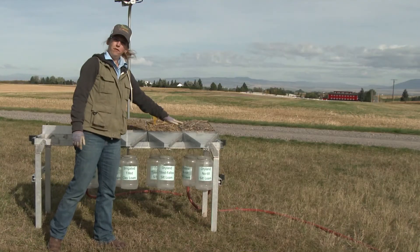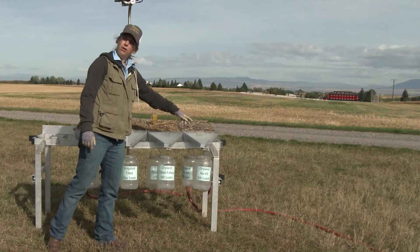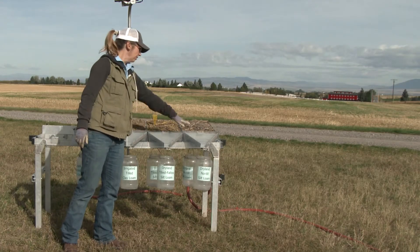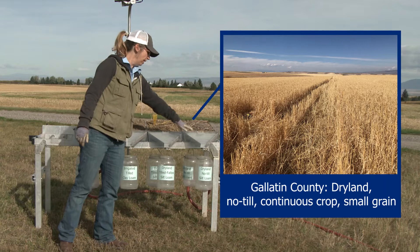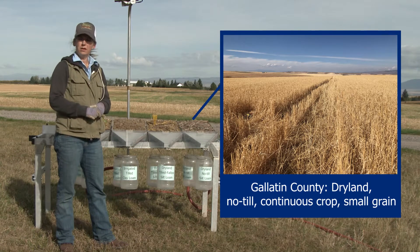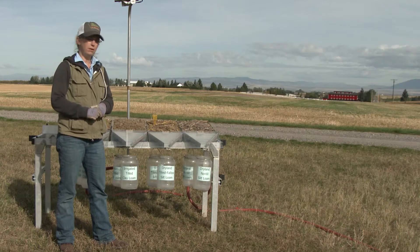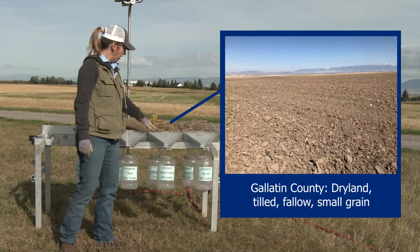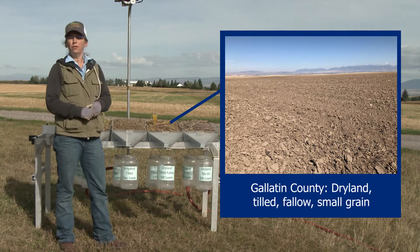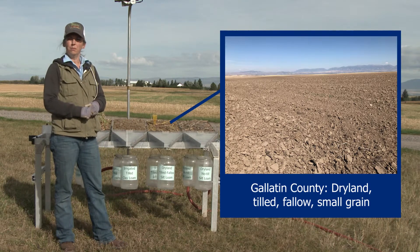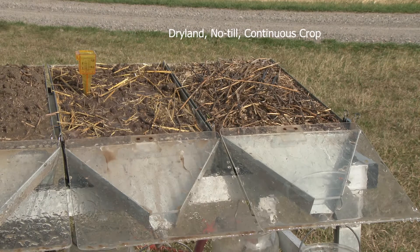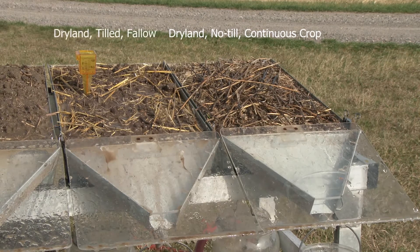This pair on the far end are right across the road from each other. This one over here has been a no-till system for about 10 years with continuous cropping, and right across the road is a tilled fallow system. Both of these systems are the same soil type — they're silt loams.